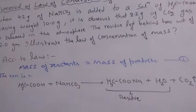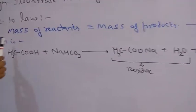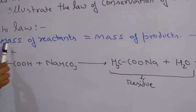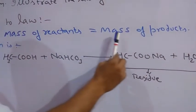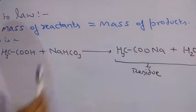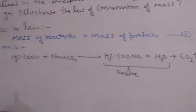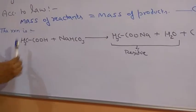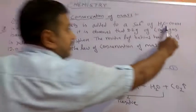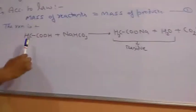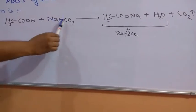Now we come to the solution of the numerical. According to the law of conservation of mass, you have already studied mass of the reactants are always equal to the mass of the products. Let's say equation number 1. Then you have to add the reaction. In the reaction, this is a reactant and another reactant is this. So you write on the left hand side: CH3COOH plus NaHCO3.